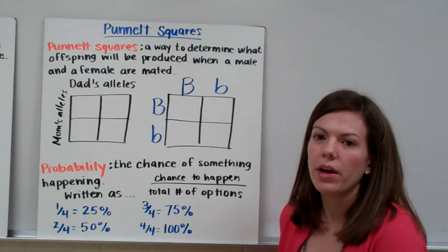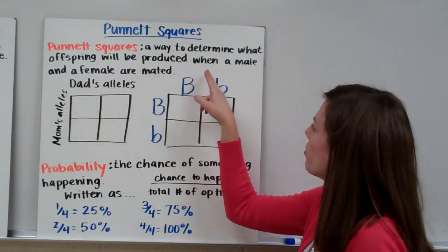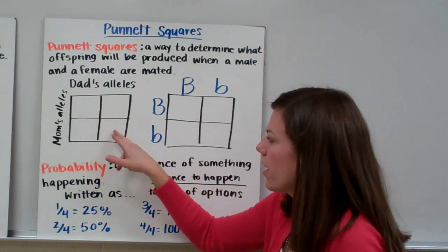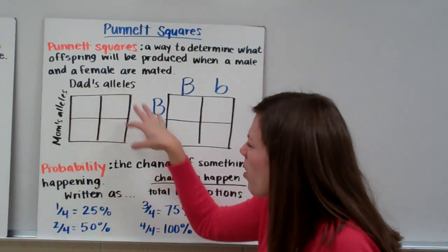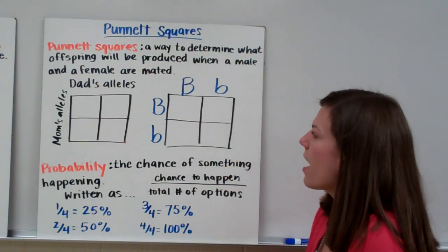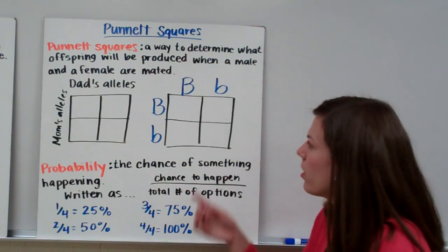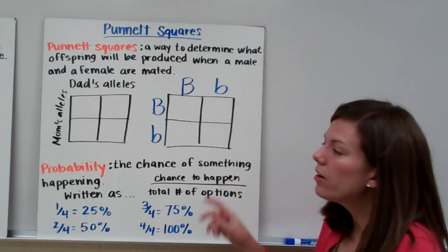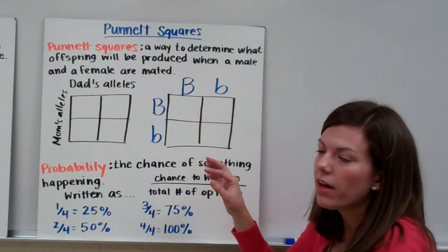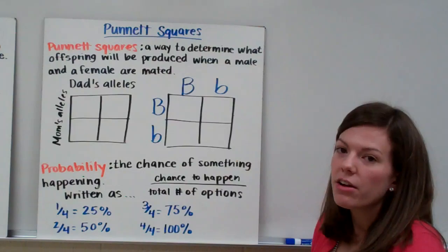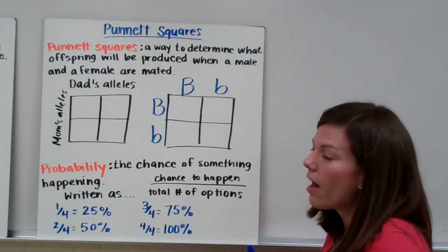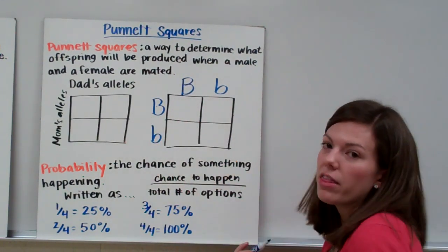Now let's look at Punnett squares. Punnett squares are a way to determine what offspring will be produced when a male and a female are mated. They look like a hopscotch square or a window pane. We put dad's alleles up top and mom's alleles on the side. If dad is heterozygous for the B allele, we would have a big B and a little B written above each of the boxes — one letter over each box.